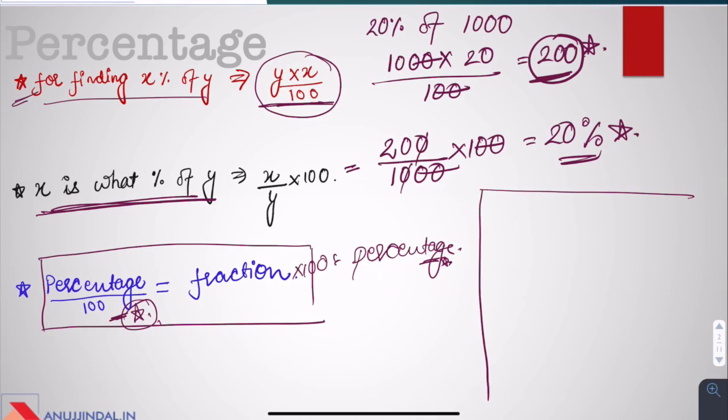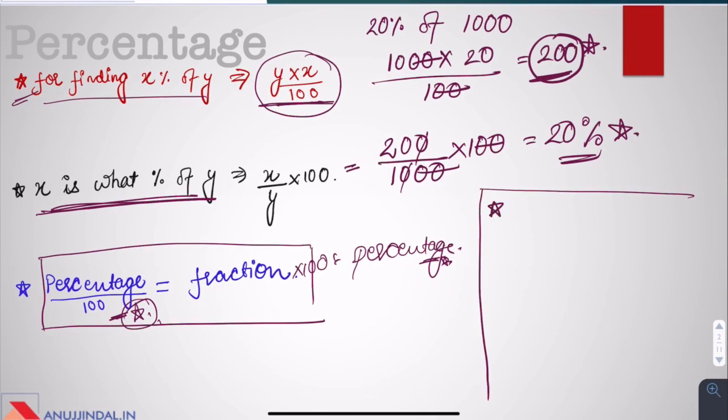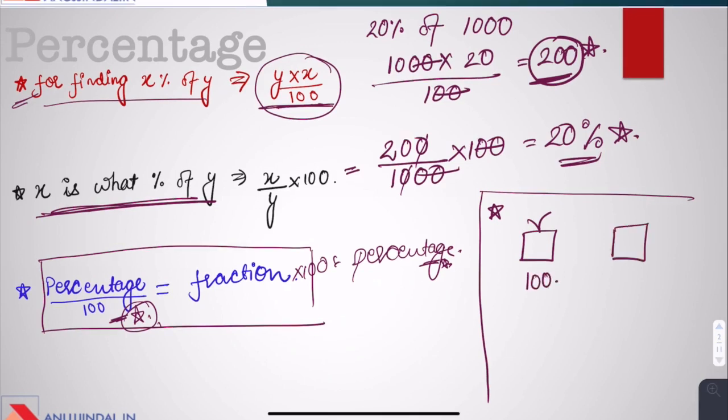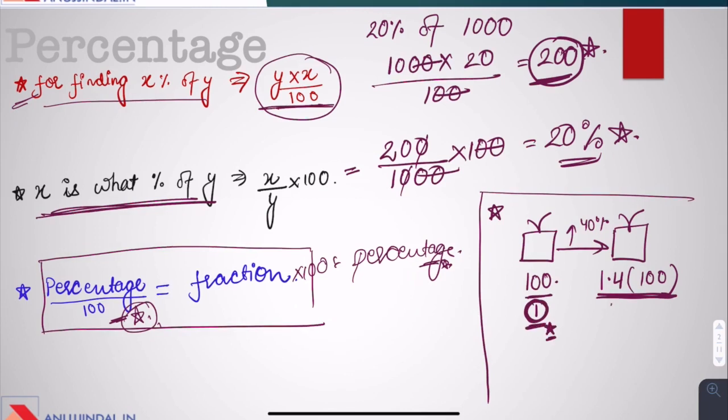One more important thing, if in a question you are given that price of something or quantity of something is increased by some percentage. Let's say there's a TV whose price is 100 rupees and now the price of this TV is increased by 40%. So the new price would be 100 into 1.4. When we say unit, we say the initial price, we just assume it to be a unit, then it has been increased by 40% which makes it 0.4, 1.4.